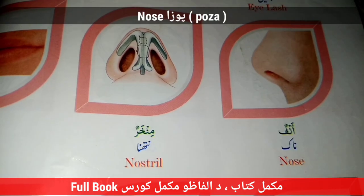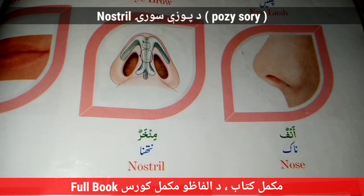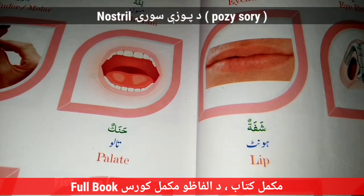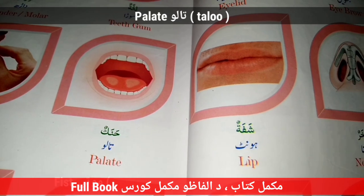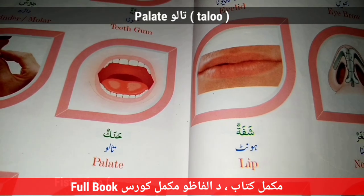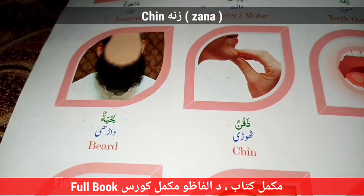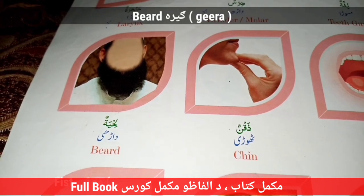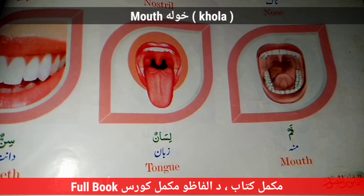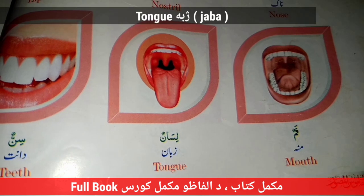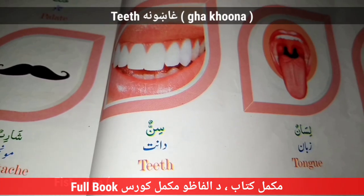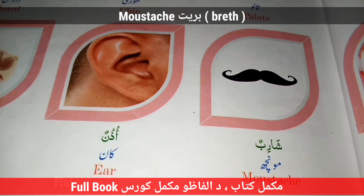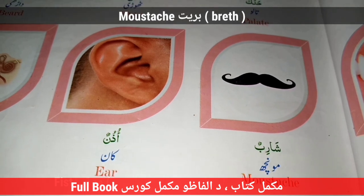Nose — Posa. Nostril — Dapuze — Suray. Lip — Shunda. Palate — Talu. Chin — Zana. Beard — Gira. Mouth — Khula. Tongue — Jabba. Teeth — Gahuna. Moustache. Breath.